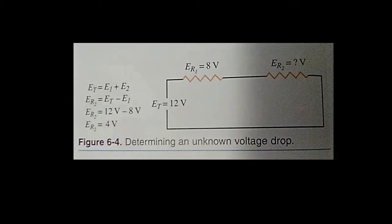Determining an unknown voltage. To find a single unknown voltage value, subtract the known resistance voltage drop values from the source. In figure 6-4, two resistors are wired in series. The value of R1 is 8 volts and the source is equal to 12 volts. To apply the law of voltages in a series circuit, subtract the known circuit voltage drops from the source.